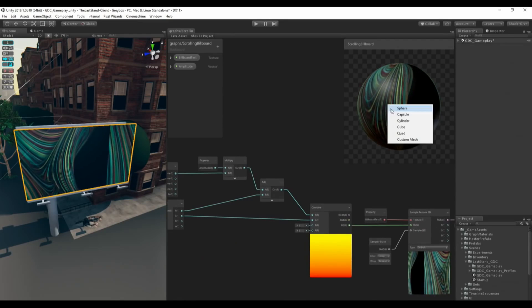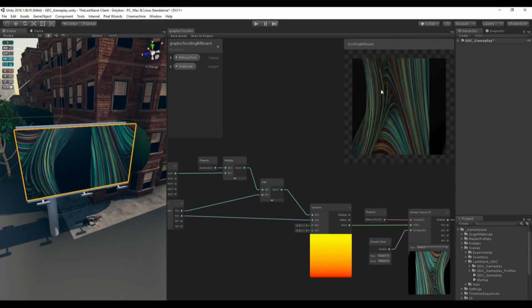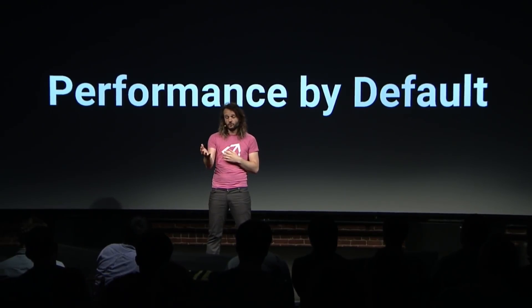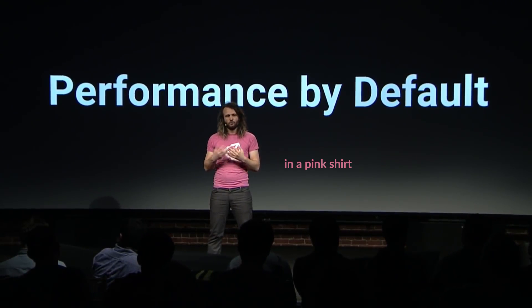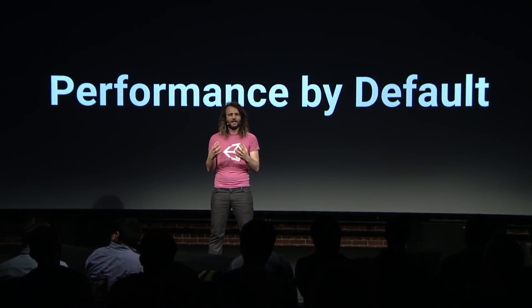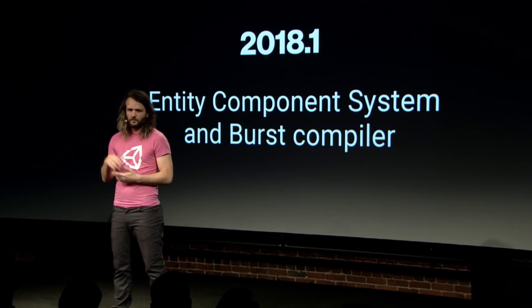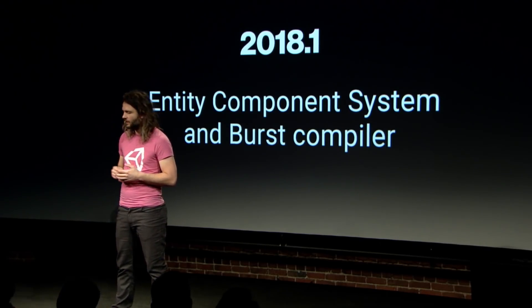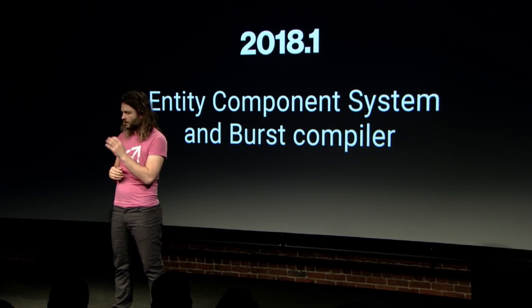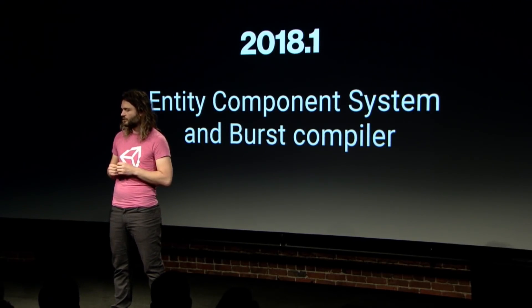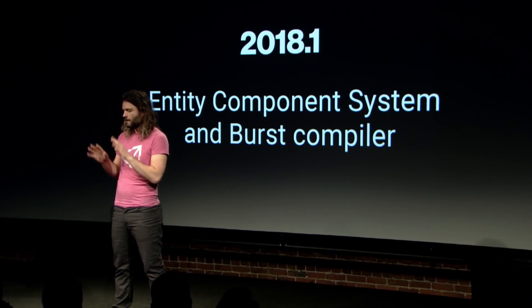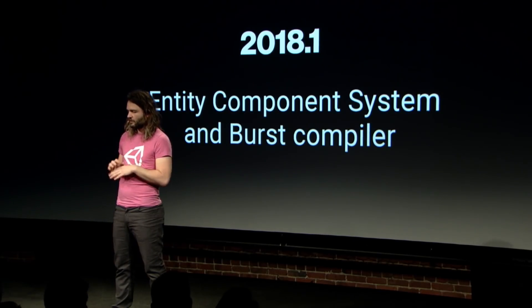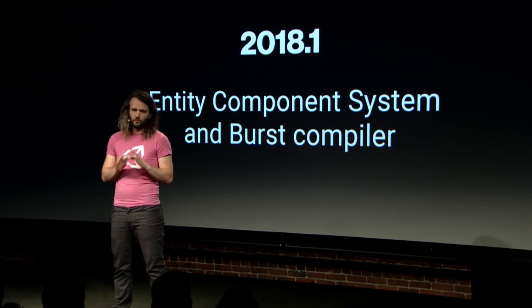The presentation then moved on to a tiny demo of Shader Graph, and finally Joachim jumped on stage to talk about performance and the future of programming in Unity. Most importantly, he announced that the Entity Component System is now available in preview, which is definitely exciting.